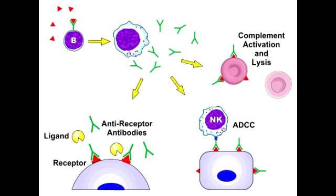The second mechanism is complement-mediated lysis, in which there is formation of the membrane attack complex, which destroys the cell membrane, killing the pathogen. The third mechanism is antibody-dependent cell-mediated cytotoxicity, or ADCC, which is usually due to natural killer cells. In this, IgG or IgM antibody tags the foreign antigen, which is then killed by natural killer cells.